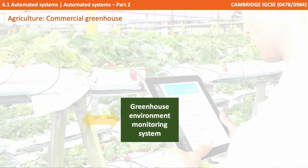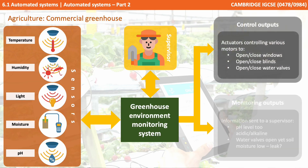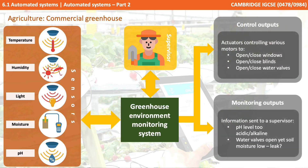The third area to consider is agriculture, and here we're looking at a commercial greenhouse. A number of sensors collect a range of information from the environment such as temperature, humidity, light, moisture, and pH level of the soil. This is all fed into a computer system where a microprocessor looks at the readings, compares them against values, and uses a set of rules to decide what to do. One type of output is simple monitoring outputs, where information is sent to a display informing, for example, that levels of pH suggest the soil might be too acidic or alkaline.